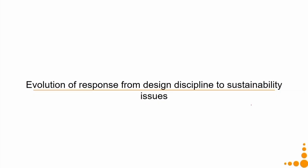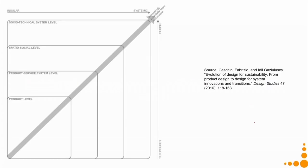Since we are from the design discipline, we will discuss the evolution of responses from the design discipline to sustainability issues. We can place design responses in a framework with four levels: product level, product service system level, spatio-social level, and socio-technical system level. These are the four levels at which design intervention for sustainability is possible.